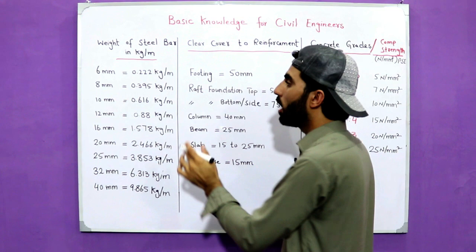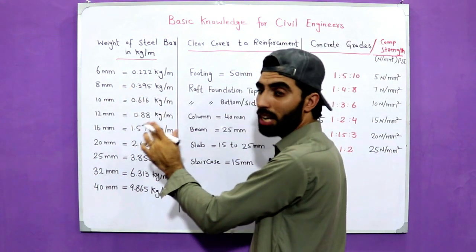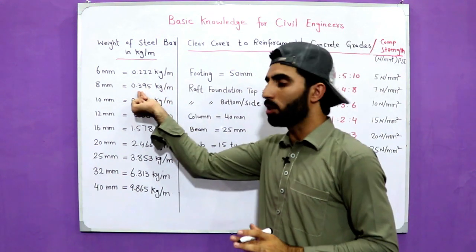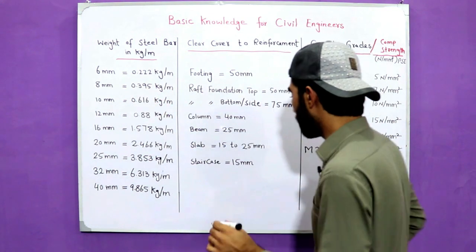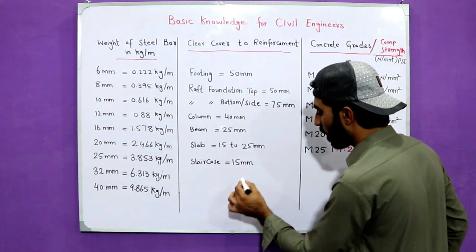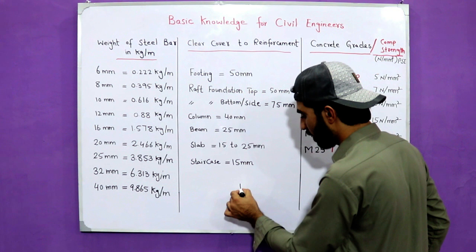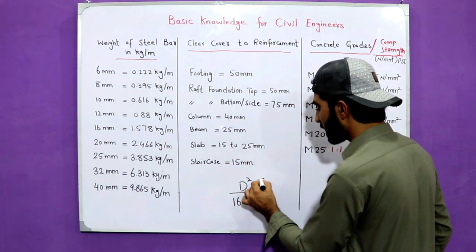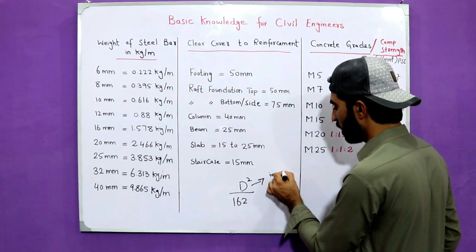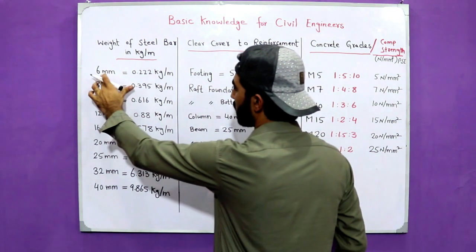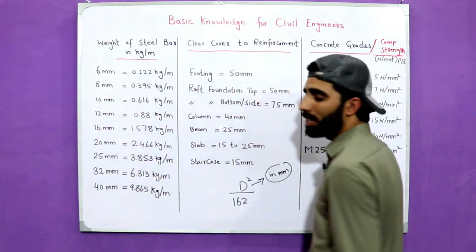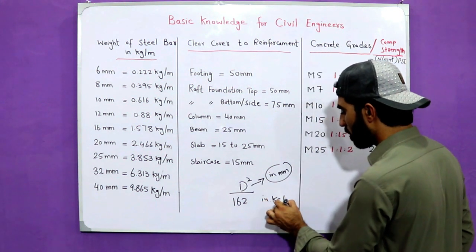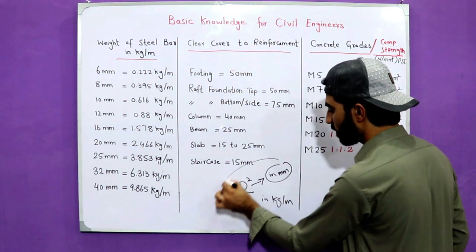For 6mm diameter steel bar, the weight is 0.22 kg per meter, and for 8mm it's 0.395 kg per meter. Where do we get this value? We can calculate weight of steel with the formula: d² divided by 162, where dia should be in millimeters.